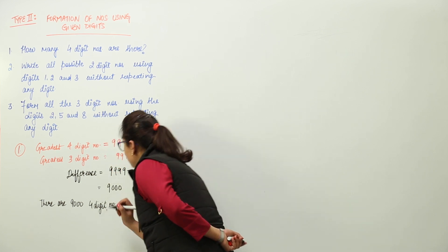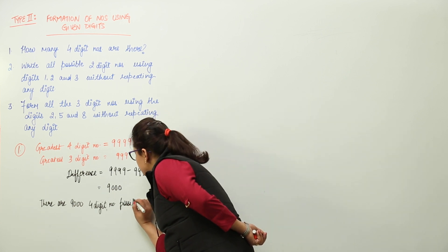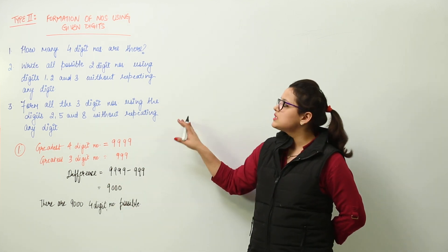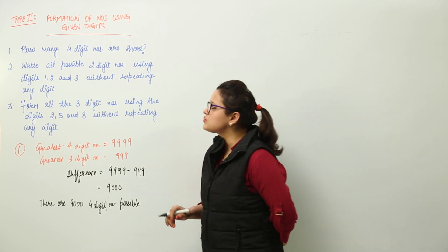This is how you can find the number of four-digit numbers existing. You can similarly find out how many six-digit numbers exist, and so on.